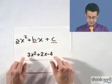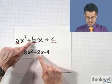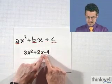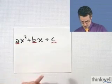How about this one? Well, here I see the a is 3, the b is 2, and now the c is going to be negative 4. The negative sign goes to the constant.